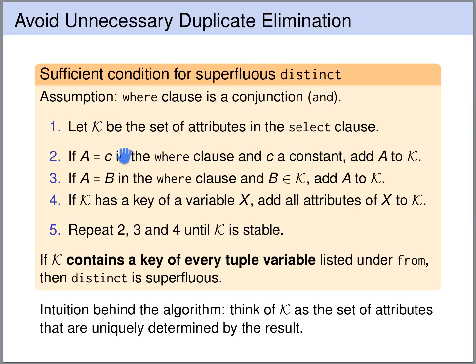Our WHERE clause is a conjunction. If there is a conjunct that says an attribute A is equal to a constant, then attribute A is also uniquely determined, so we add A to K. If in the WHERE clause we have an equation A equals B, and B is an attribute already known to be uniquely determined by the output — so B is already in K — then A must also be uniquely determined, so A is added to K.